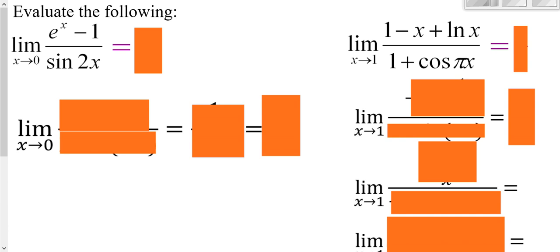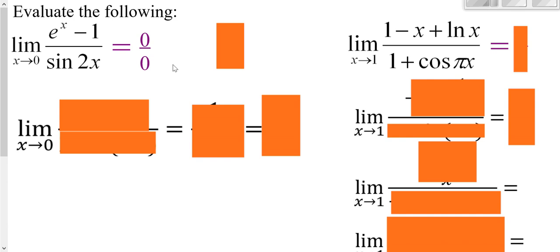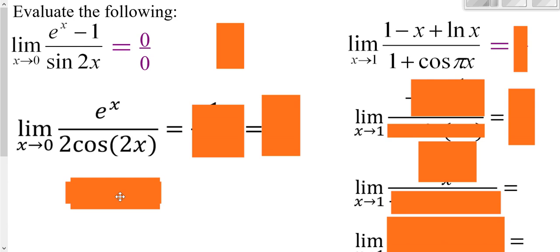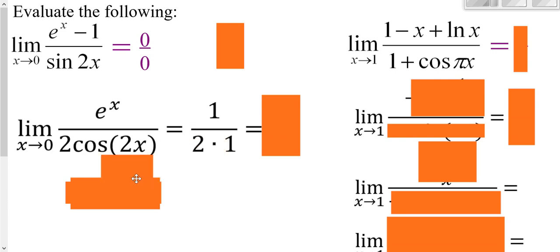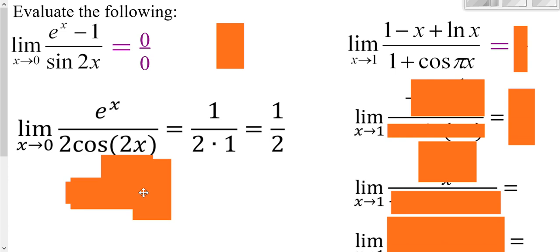Let's evaluate this limit. Plugging in 0 on the top: e to the 0 is 1, and 1 minus 1 is 0. Plug in 0 on the bottom and we get 0. So we get 0 over 0 — an indeterminate form — so we apply L'Hôpital's Rule: derivative of the top over derivative of the bottom. Plugging in 0 on the top gives e to the 0 = 1; on the bottom, 2 times 1. So we get 1/2. Whenever you're dealing with an indeterminate form, you can't determine your answer until you do more work, and L'Hôpital's allows us to do that.